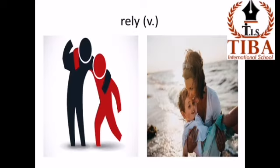If you look at the photo, you'll see two friends relying on each other — whenever they need help, they help each other. Or like a small boy relying on his mother to satisfy his needs. Most of the time we rely on our mothers to do many things — make our beds, make breakfast, prepare everything for us. So we rely on them, meaning we depend on them all the time.